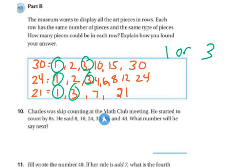Charles was skip counting in the math club meeting. He started to count by 8. He said 8, 16, 24, 32, 40, and 48. What number did he say next? If you look at the pattern, it looks like he's skip counting by 8 because 8 plus 8 is 16. 16 plus 8 is 24, and so on. So 48. If I add 8 to it, I will get 56.